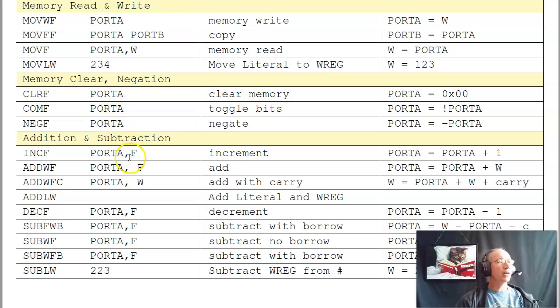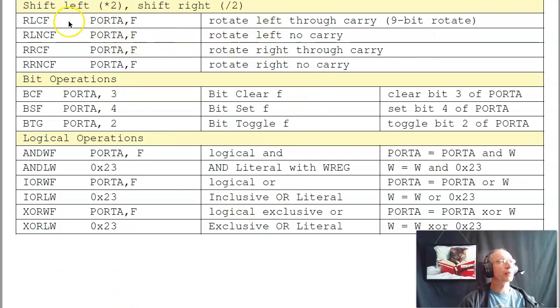For C, for i equals 1 to 10, i++ is the common C instruction. So they have increment by 1, that's the built-in instruction. I can add. Add WF is add port A to W, then put the result in port A. That's a comma F. If I make that a W, that's add port A to W, put the result in W. I can add with carry. I can add a literal, like add literal 123. I can decrement, subtract, subtract with borrow, subtract a literal. Rotate left, that's times 2. Rotate right, divide by 2.